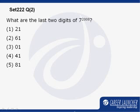This particular question was one of the most common questions one can expect in CAT. Mind well, 7 is the only digit which has a cyclicity for the last two digits. Let us take an example.